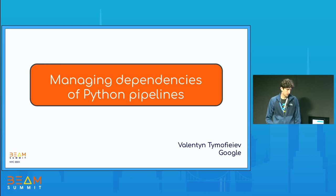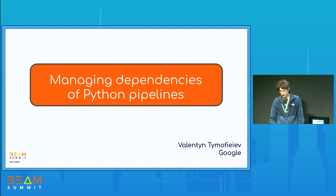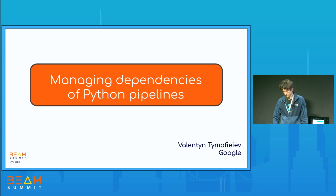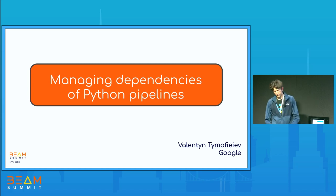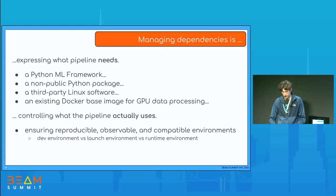I don't write a lot of pipelines, but I do debug a fair bit of pipelines. I'll be sharing some of my observations, what I know, what is possible, what works. And I would be glad to hear any feedback from real users of Apache Beam — what works in practice and what doesn't, and what is particularly painful. So let's get started.